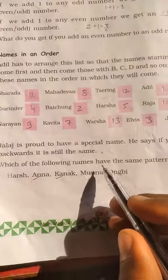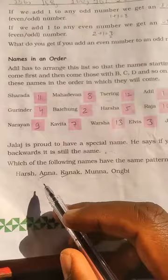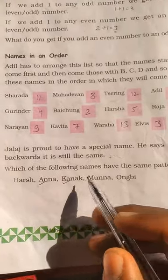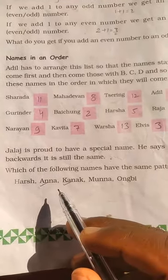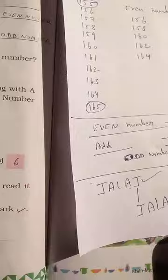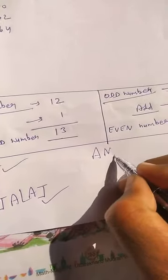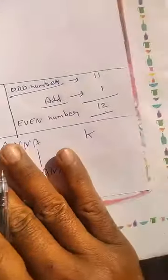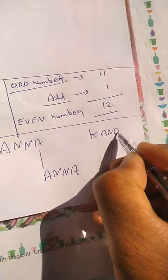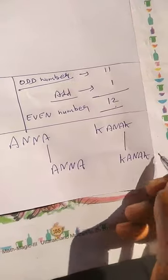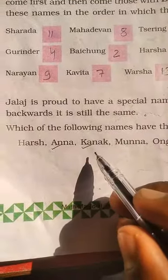Which of the following names have the same pattern? First: Anna — A-N-N-A. Reading backwards: A-N-N-A — same! Next: Kanak — K-A-N-A-K. Reading backwards: K-A-N-A-K — same! So Anna and Kanak follow the same palindrome pattern as Jalaj.